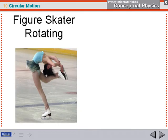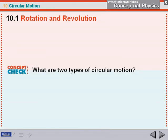Here's a figure skater rotating. She's going to rotate, doing a very tight spin on one skate. She could also revolve if she has a partner. I don't know why the picture isn't showing up there.